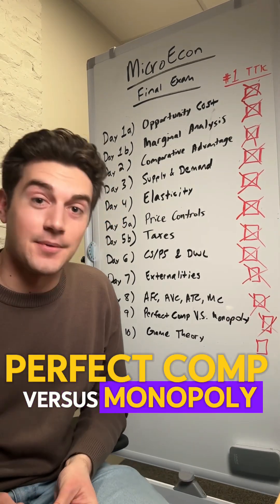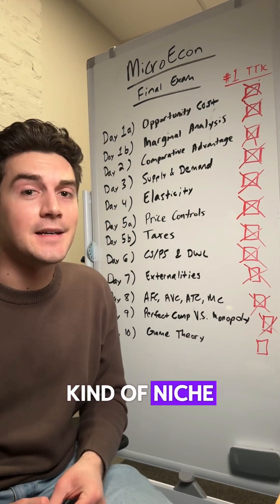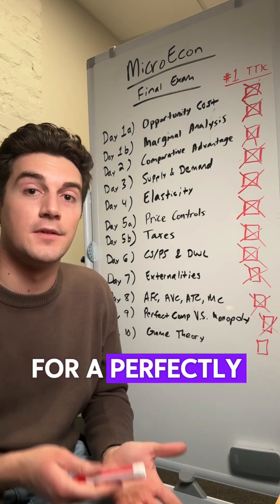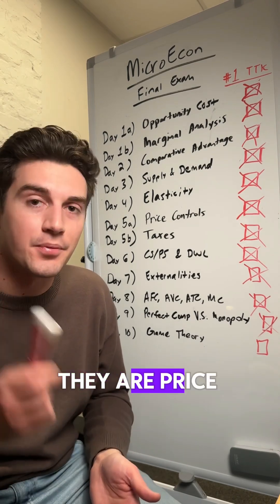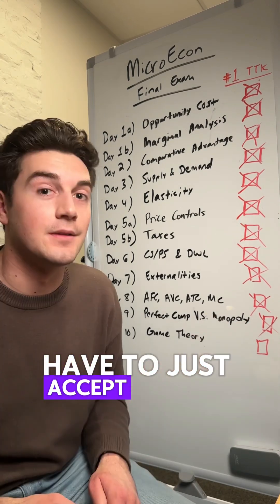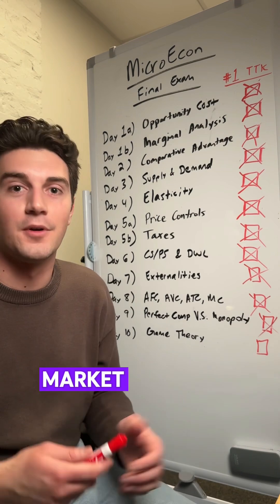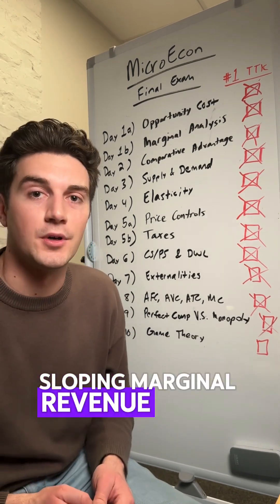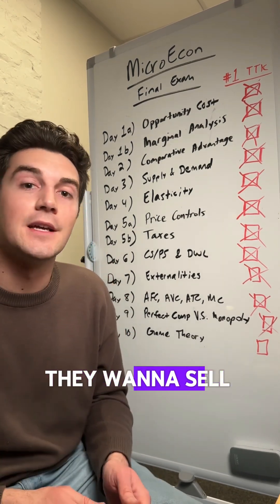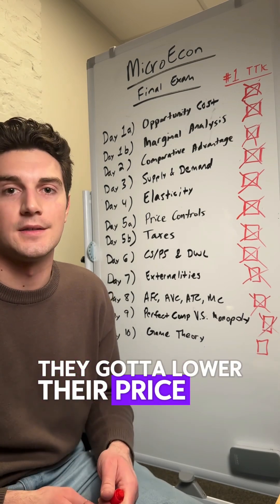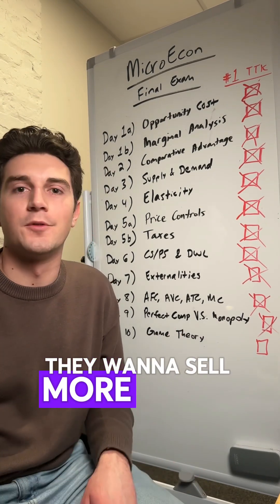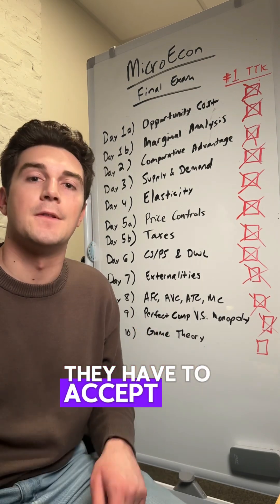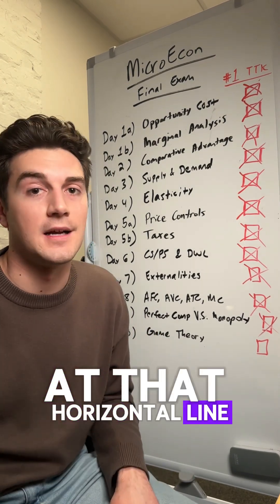Perfect competition versus monopoly. The marginal revenue curve for a perfectly competitive firm is horizontal — they are price takers and have to accept the price that the market is selling the good at. Monopolies have a downward-sloping marginal revenue curve; if they want to sell more units, they have to lower their price. For the perfectly competitive firm, they won't lower their price — they have to accept the market price at that horizontal line.